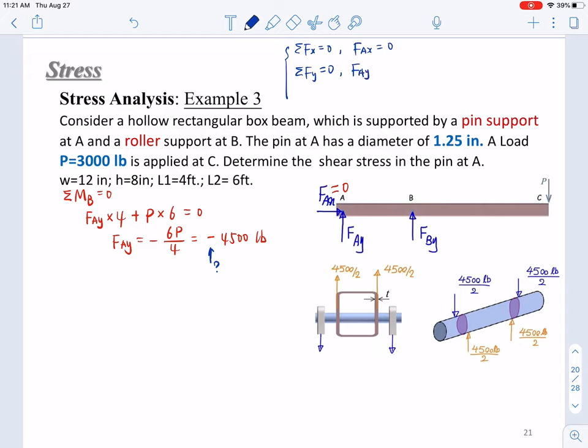If you look at point A, you can write three equations. The first equation will be sum F_X equals zero, you'll get F_AX equals zero. The second equation will be F_Y equals zero, so that means F_AY plus F_BY minus P equals zero. And M at point A equals zero, so that would be F_BY times L1, or 4, right, minus P times L1 plus L2, that would be 10, equals zero. So you can solve F_BY first, then substitute it into the second equation, so you can get F_AY.